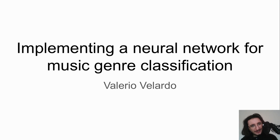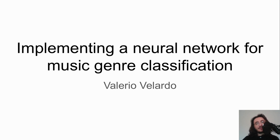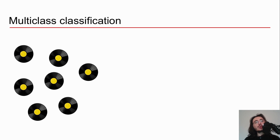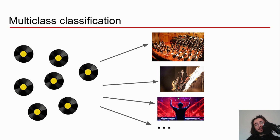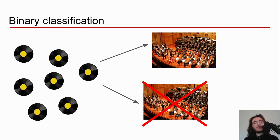Music genre classification is a type of problem called a classification problem. A classification problem is where I have a bunch of data and I want to classify it — for example, a bunch of tracks that I want to classify into rock, blues, or classical music. Specifically, what we're doing today is called multi-class classification, as opposed to binary classification where we just have two categories.